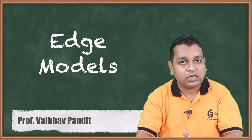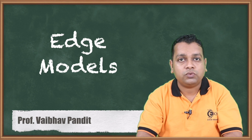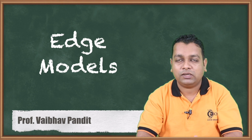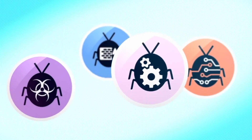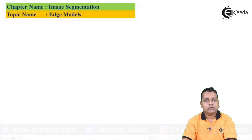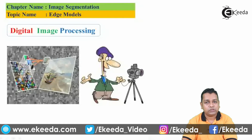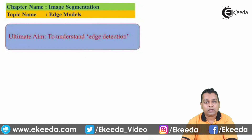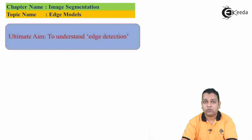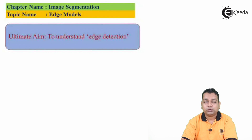For understanding edge detection, which is the next technique, we are supposed to understand the several types of edge models that form the foundation. Our ultimate aim is to understand edge detection, which is very popular. The edge detectors and operators we generally list include the Sobel operator, Prewitt operator, Roberts operator, and Canny operator. To understand them we require an understanding of the edge model.